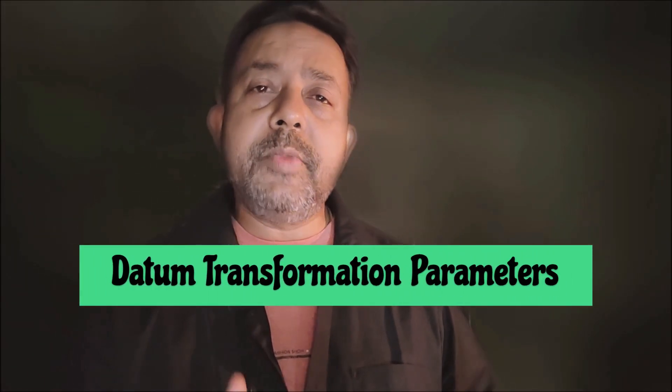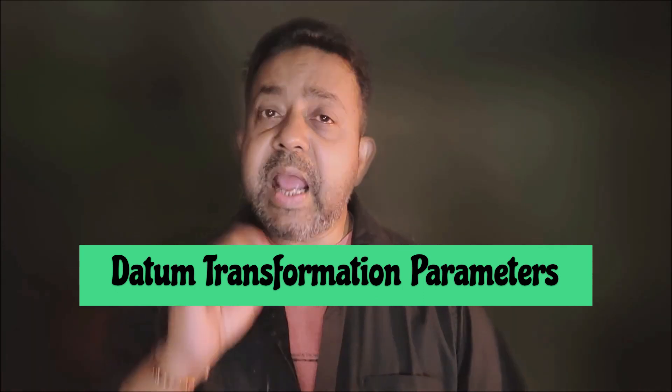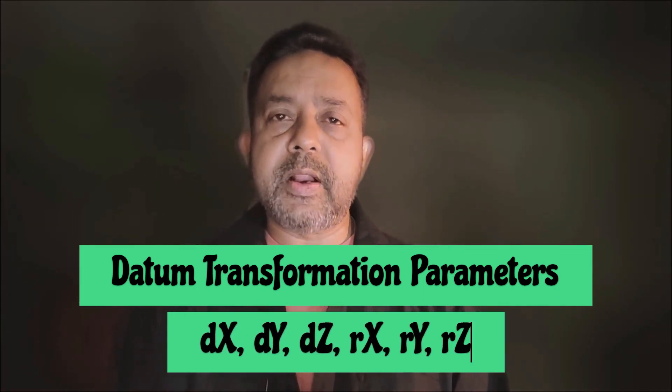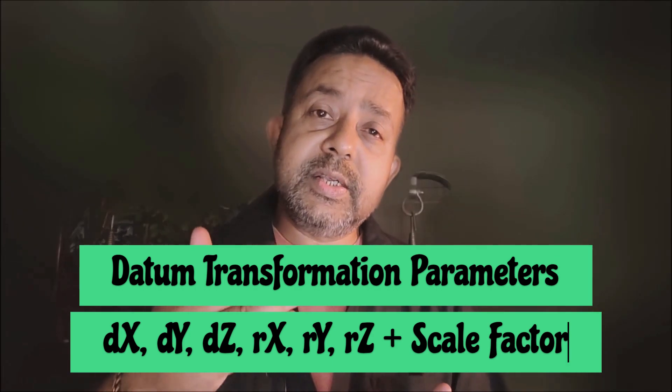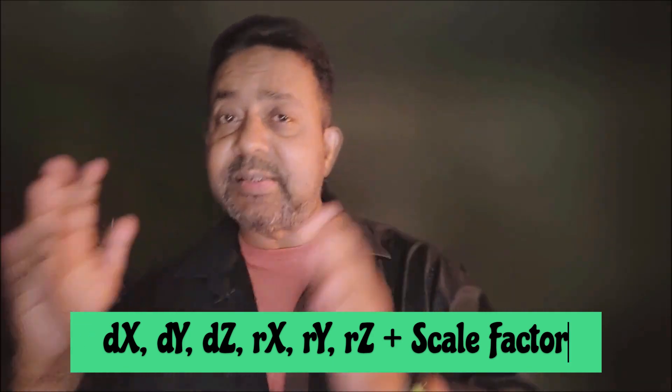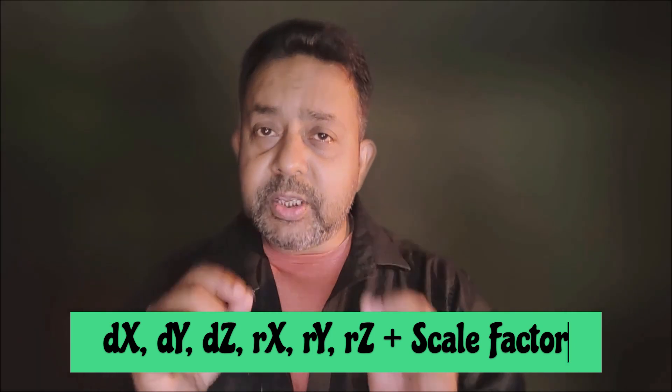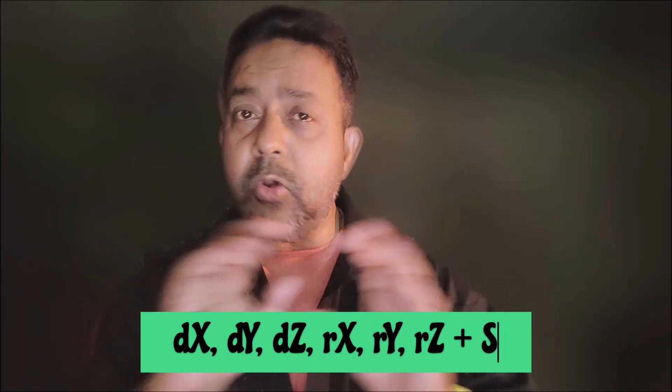Now, many times you have seen that we need to convert one coordinate system to another coordinate system. And you must have seen that we use something called datum transformation parameters to convert them. But have you noticed that datum transformation parameters are differences and rotations in x, y, z coordinates? And they are in units of lengths, not in degree, minute, seconds. So, what's the catch here?